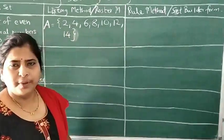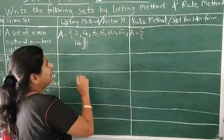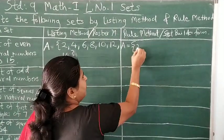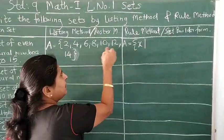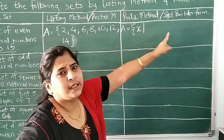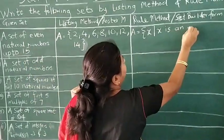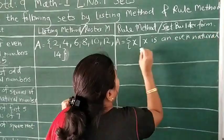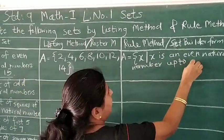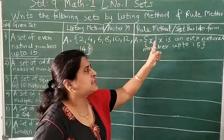Now let's see how to write with the rule method. In rule method, we write the same letter name: A is equal to, opening curly bracket. Now each element we will call by any variable letter — we can use A or X or whatever. Suppose we use X, then a vertical line. Each element is X. What is X? I will show it in two ways: first using all words, then using symbols. X is an even natural number up to 15. Whatever the given statement, it's a condition we have written as it is in words.